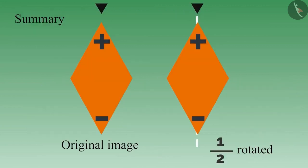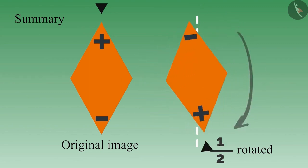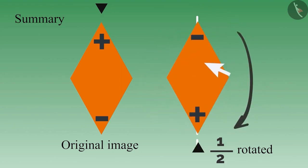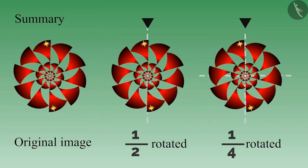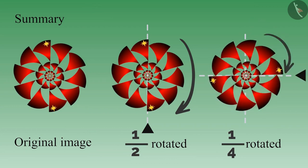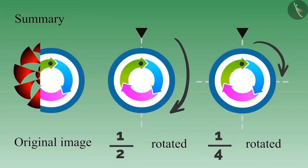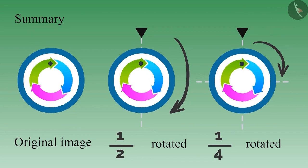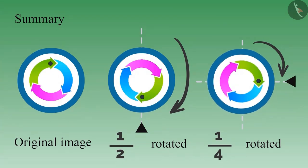In this video we learned that we should pay attention to even the small symbols marked on the image when rotating by half or one-fourth. It is not necessary that if an image looks like the original when turned by half, it will look like the original when turned by one-fourth. You also learned that it is not at all necessary that we get the original image by turning the image by half or one-fourth. Thank you.